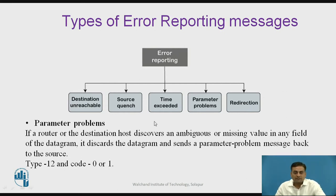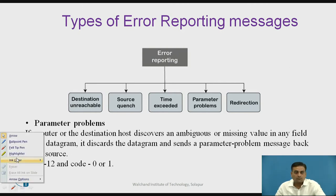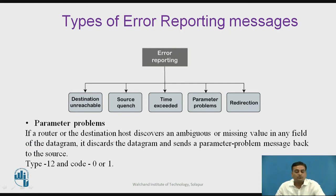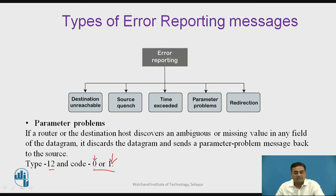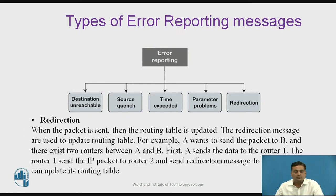The next type of error reporting message is Parameter Problem. If a router or destination host discovers any ambiguity or missing value in any field of the IP header, it discards the datagram and sends a Parameter Problem message back to the original source. For this message type, the type field contains value 12. The code field contains 0 when there is an ambiguity or error in a field, and value 1 when a value in a field of the IP datagram is missing.